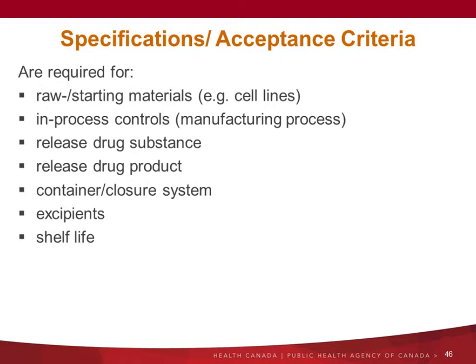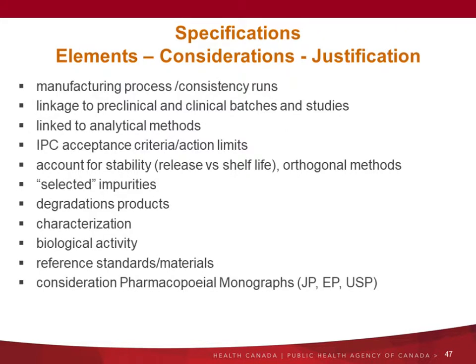Here is the list of different elements that should be considered to justify the acceptance criteria or specifications: the manufacturing process, the lots used to demonstrate consistency, the linkage to preclinical and clinical batches, the analytical methods, the in-process control acceptance criteria and action limits, accounting for stability and degradation over time, selected impurities and degradation products, characterization data, biological activity data, reference standard material, and pharmacopoeial monographs.